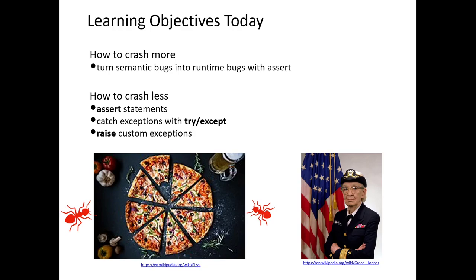If your program produced something reasonable but incorrect — something that looked plausible but was actually wrong — it would be so much better if your code crashed instead of producing the incorrect result. So we're going to learn how to turn semantic bugs into runtime bugs which will crash, using the assert statement. We're also going to learn how to crash less — there are perfectly reasonable things we expect to happen that we want to handle gracefully.